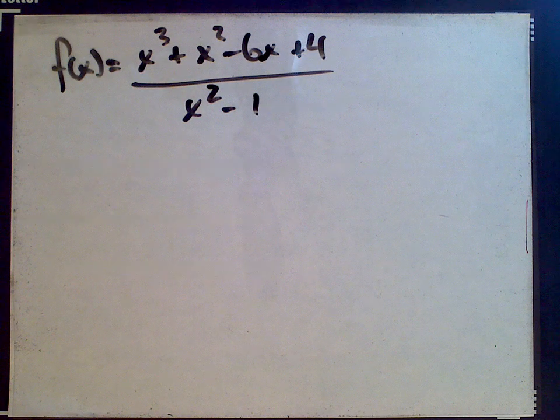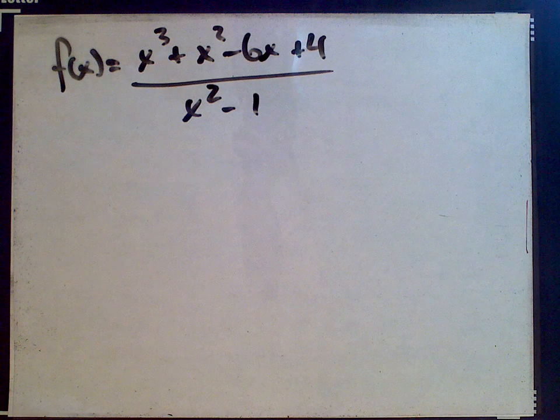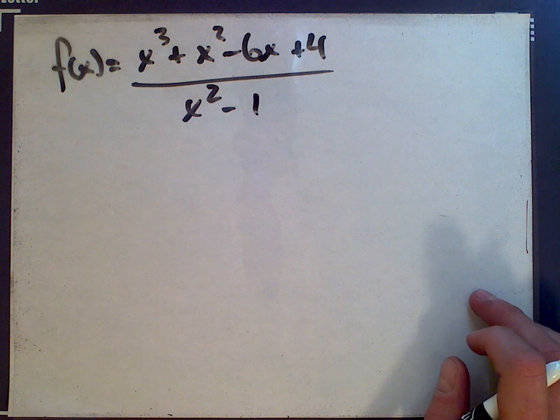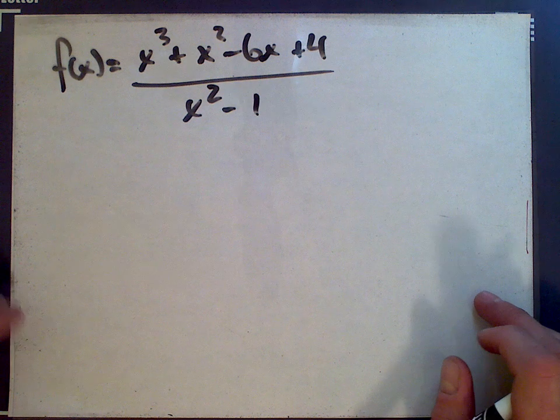We're asked to list how many asymptotes this function has. So there's vertical asymptotes, horizontal asymptotes, and slant asymptotes as possibilities.